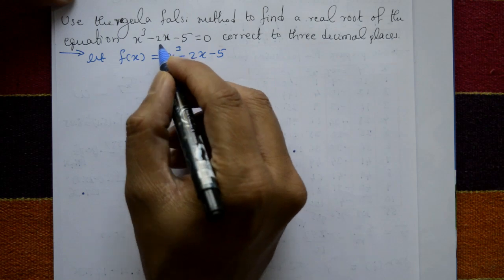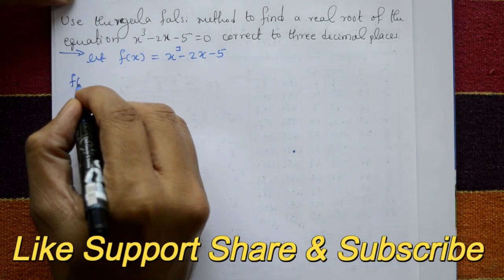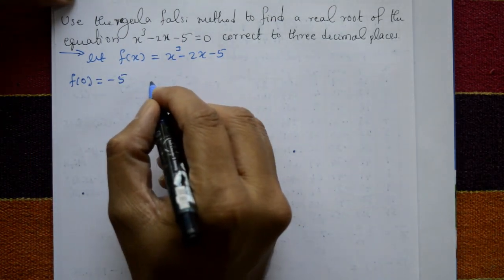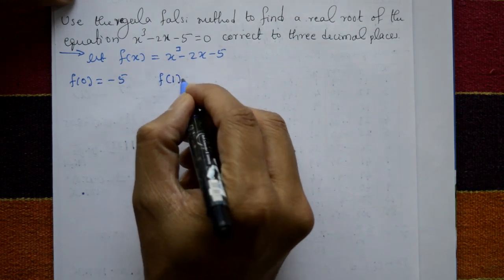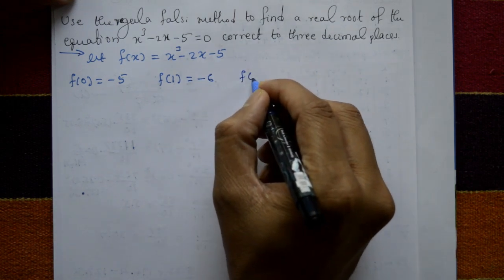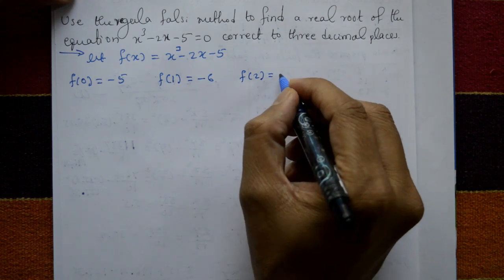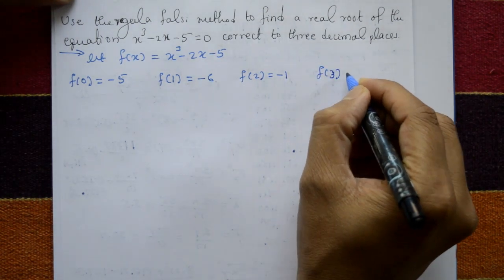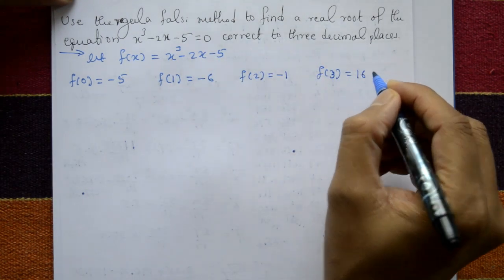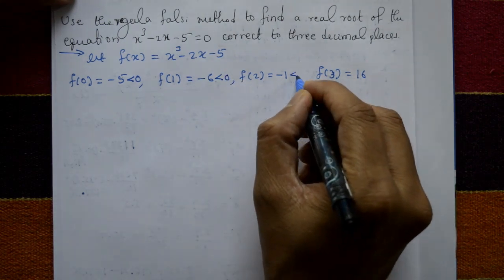We want f of x less than 0 and f of x greater than 0. Put x equal to 0, we get minus 5. Put x equal to 1, f of 1 is equal to minus 6. Put x equal to 2, f of 2 is equal to minus 1. Put x equal to 3, we get 16.